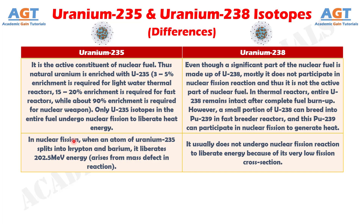Difference number 10. In nuclear fission, when an atom of Uranium-235 splits into Krypton and Barium, it liberates 202.5 MeV of energy, arising from mass defect in the reaction, whereas Uranium-238 usually does not undergo nuclear fission reaction to liberate energy because of its very low fission cross-section.